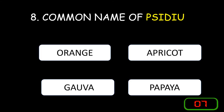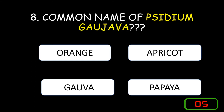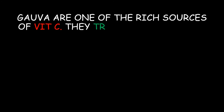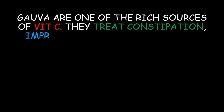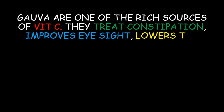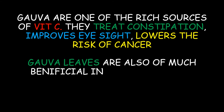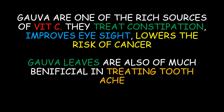The common name of Psidium guajava is guava. Guavas are one of the richest sources of vitamin C. They treat constipation, improve eyesight, and lower the risk of cancer. Guava leaves are also very beneficial in treating toothache.